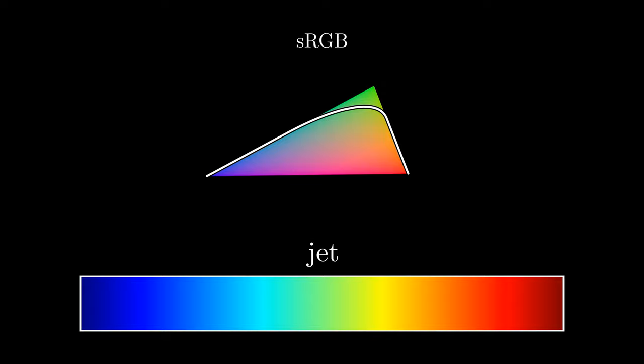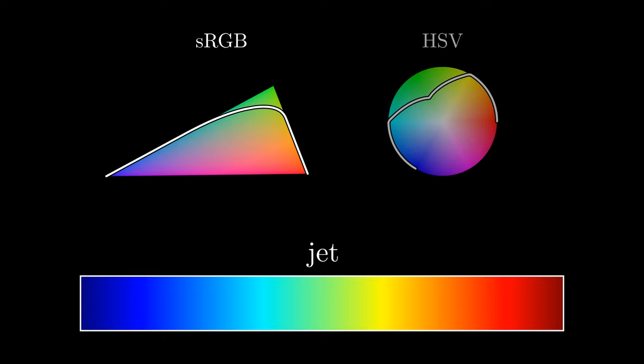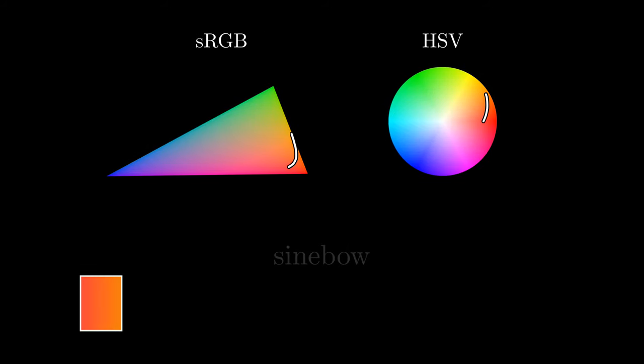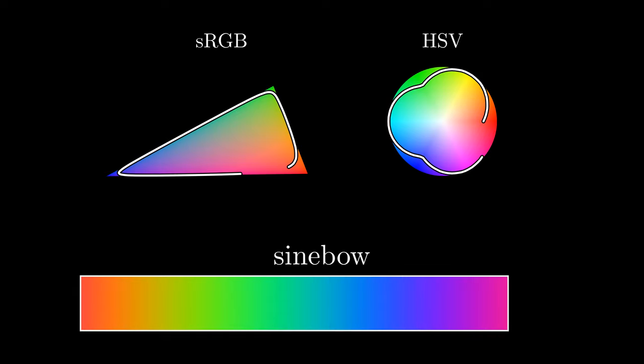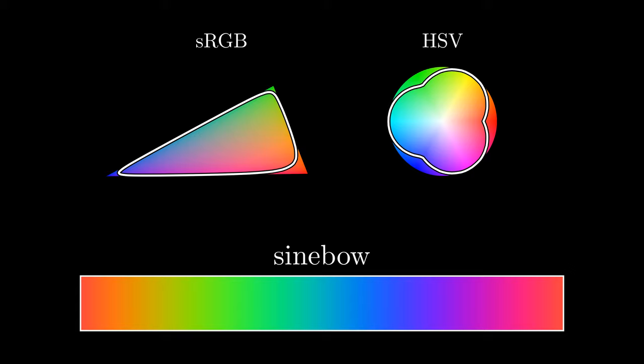Fortunately, we can just invent new color spaces on top of sRGB that have different properties. For example, the HSV space makes it easier to draw paths that smoothly transition through hue and saturation. The HSV space isn't perceptually smooth though, and creating a smooth color space took a lot of effort.